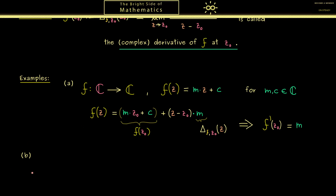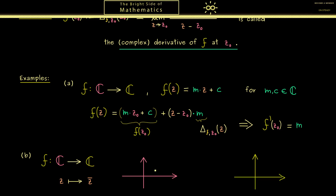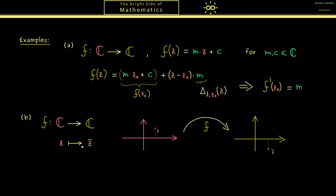For the next part let's look at an example where the function is not differentiable. Again the domain is the whole complex plane, and the function sends z to its complex conjugate z̄. To see what the function does: the function f just flips any point with respect to the x-axis — the real part stays the same but the imaginary part gets a different sign. So this reflection is all the function f does. It's not hard to show this function is continuous, however it turns out it is not differentiable at any point z0.